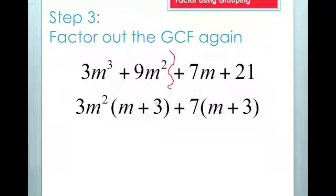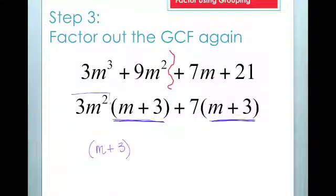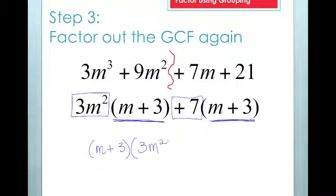Now I'm going to factor out the greatest common factor again. Notice that both parts have an m plus three. And then I'm left with three m squared plus seven. I've completed my factorization of this polynomial.